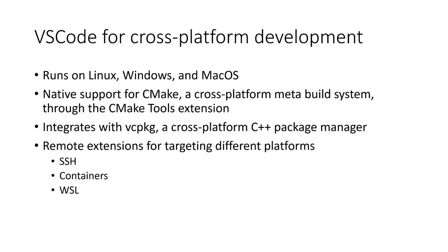Now that you've seen some of the core C++ language features in VS Code, let's talk about cross-platform development. Cross-platform development is super popular these days — we see in survey feedback that people are developing for more than one platform or for a platform different from their host OS. VS Code is a great option for both scenarios. It runs on Linux, Windows, and macOS, has native support for CMake as a cross-platform meta build system, and integrates well with vcpkg, which also works across all platforms.